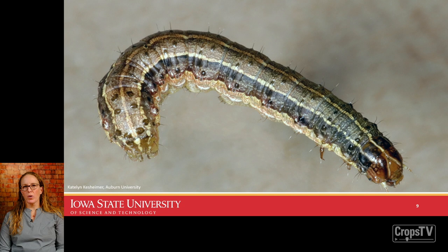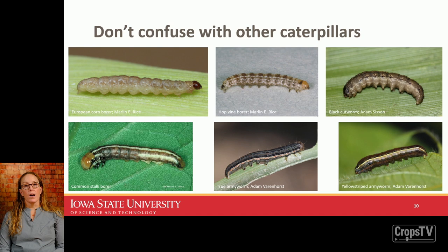Here's a close-up of those two characteristic features: the inverted Y on the head capsule and the four raised bumps on the end of the abdomen. However, easier said than done — there are a lot of caterpillars in corn and other armyworms and cutworms. They all have four prolegs and can be mottled with stripes, especially true armyworm and yellow-striped armyworm, but they're going to be missing that characteristic inverted Y in the head capsule.